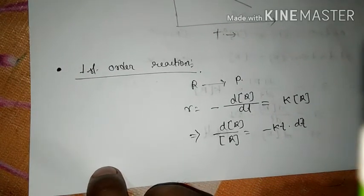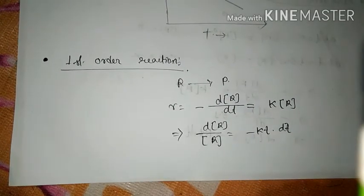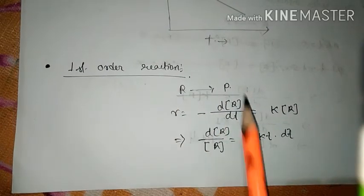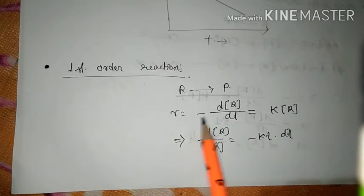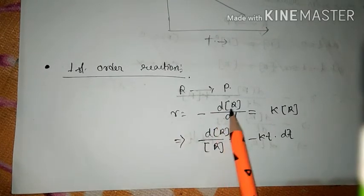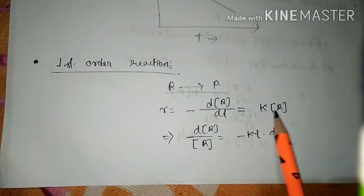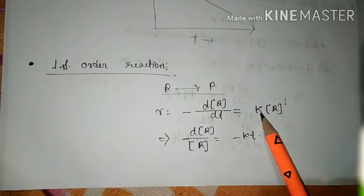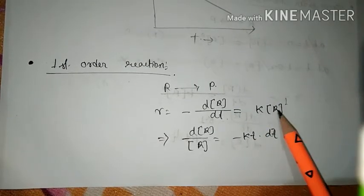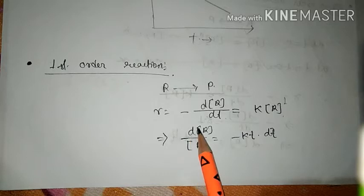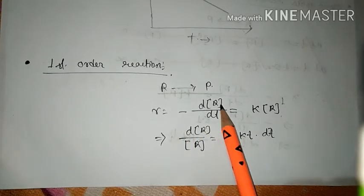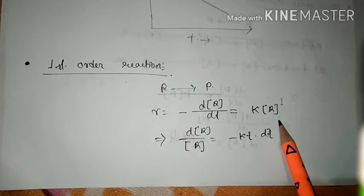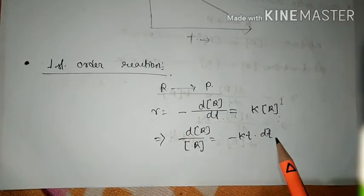Next, we'll discuss the first order reaction. For the first order reaction, when reactant goes to product, the rate is: -d[R]/dt = k[R]^1. Since it is first order, the power is one. If we rearrange: dR/R = -k·dt.